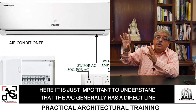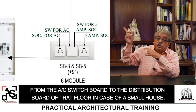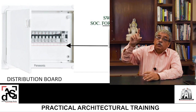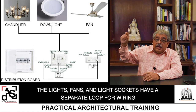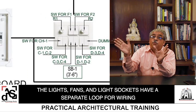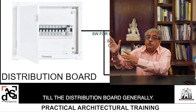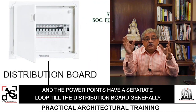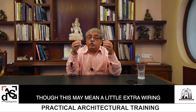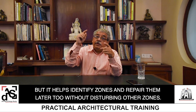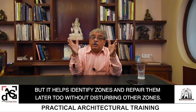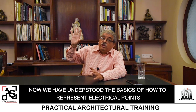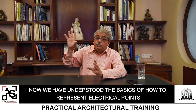It is important to understand that the AC generally has a direct line from the AC switchboard to the distribution board of that floor. In case of a small house, the lights, fans, and light sockets all have a separate loop for wiring to the distribution board, and the power points have a separate loop to the distribution board. This helps in identifying zones and repairing them later without disturbing the other zones.